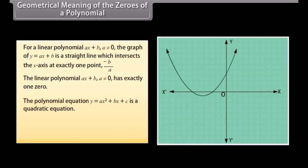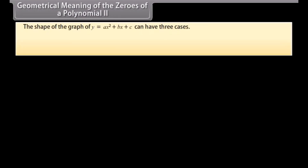The polynomial equation y equals ax squared plus bx plus c is a quadratic equation. The graph of a quadratic equation is a parabolic curve. The shape of the graph of y equals ax squared plus bx plus c can have three cases. Let's discuss them one by one.